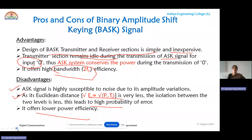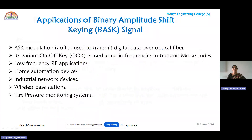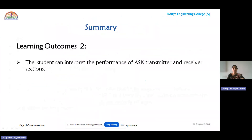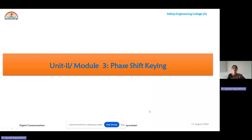These are the pros and cons of binary ASK. Applications of binary ASK signal include home automation, industrial network devices, wireless base stations, tire pressure monitoring systems, and even transmission of Morse code — that is, dots and dashes. In this module we have discussed the ASK transmitter section as well as the ASK coherent and non-coherent types of detection. In the next module, we will discuss the phase shift keying technique.